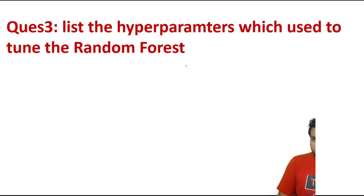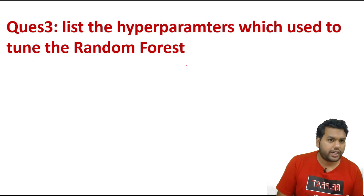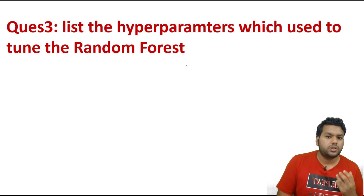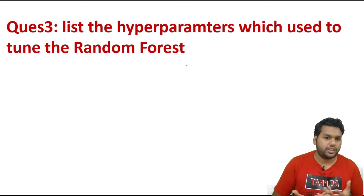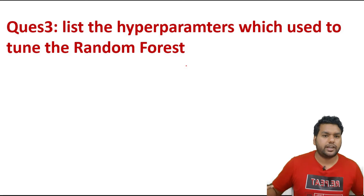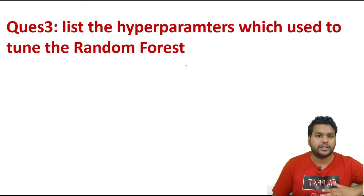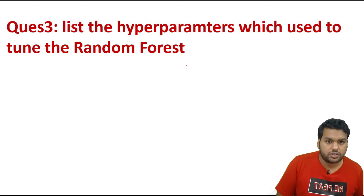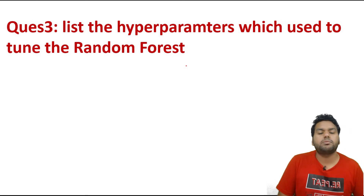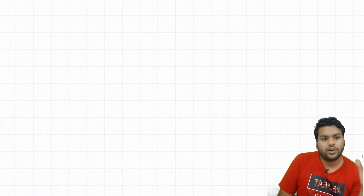The third question asks us to list some hyperparameters used to tune a random forest model. Random forest uses decision trees as base learners, so as the number of base learners increases, variance decreases and we avoid overfitting. The number of estimators — that is, the number of decision trees — is therefore one of the most important hyperparameters for random forest.